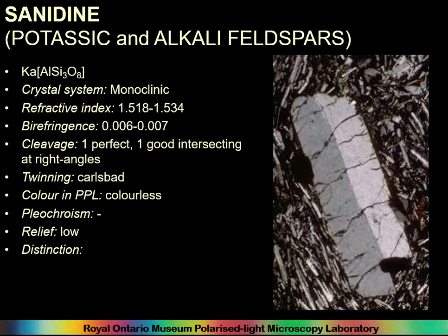Now we come to the feldspar group. Sanidine is shown briefly — you're very unlikely to ever identify it even if you do encounter it. You get it in certain potassic and alkali feldspars as phenocrysts. It has simple twinning, but if you had a tiny fragment of it, you'd probably think it was something else, so don't worry about it.